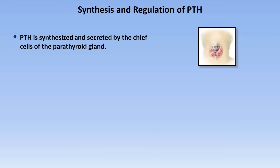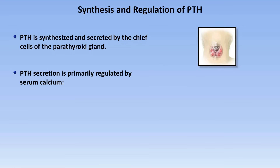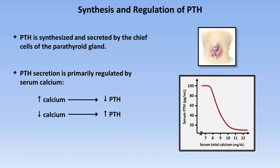PTH is synthesized and secreted by the chief cells of the parathyroid gland. Its secretion is primarily regulated by serum calcium. Elevated calcium inhibits PTH synthesis and release; decreased calcium stimulates it. The curve of how PTH secretion relates to serum calcium is important. Over the range of normal total calcium levels of about 8 to 10.5 mg per deciliter, the relationship is relatively linear. However, when serum calcium is below normal, serum PTH secretion is maximized at around 100 picograms per milliliter. No matter how low the calcium gets, a normal set of parathyroid glands will not secrete any more PTH than that. Likewise, no matter how elevated above normal your serum calcium rises, PTH secretion will never be fully suppressed.